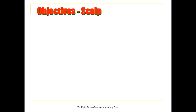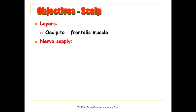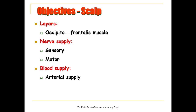The objective of the first part of the presentation is about the scalp. I'm going to cover the following: first we'll talk about the layers and we will focus on the muscle, which is the occipitofrontalis muscle. Then we'll talk about its nerve supply — the sensory and motor — and the blood supply including the arterial supply, the venous drainage, and the lymphatic drainage as well.